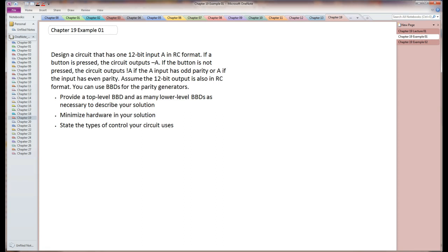This is chapter 19, example 1. What we have here is a problem that makes a bunch of choices, which means we're going to need a bunch of MUXs. It also does something with parity, so we're going to need a parity generator or a parity checker.